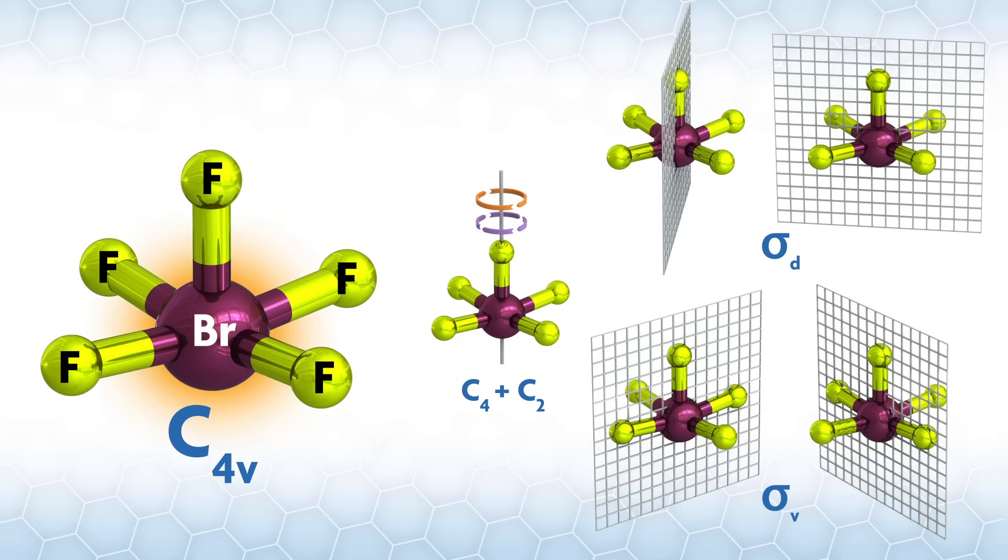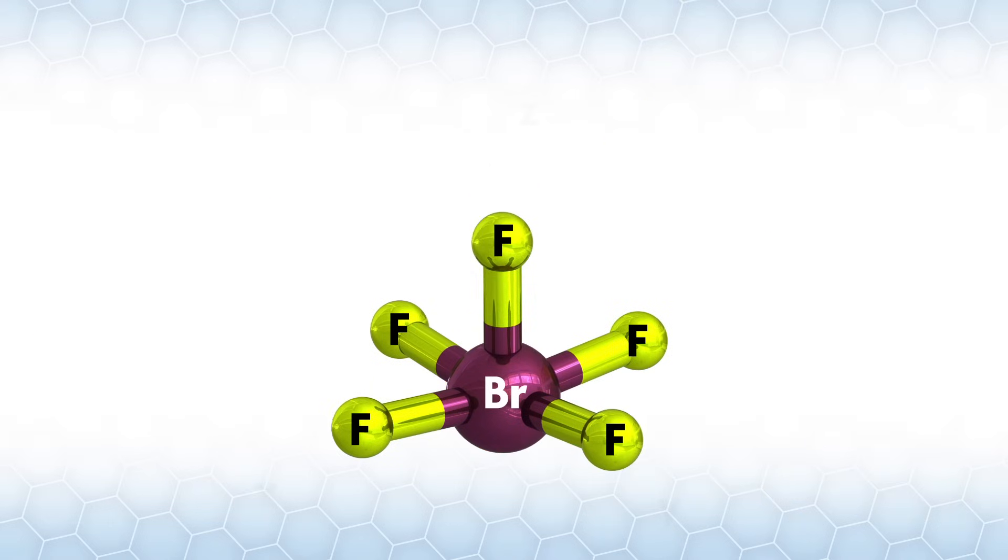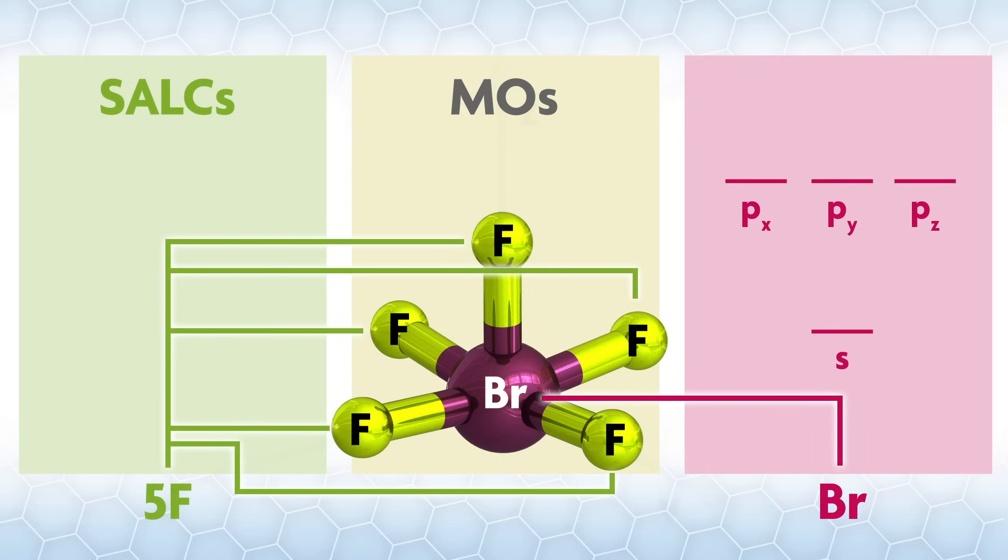Using our BrF5 example, we will write out the molecule with appropriate axes. As discussed in the group theory video, the principal rotation axis is almost always the highest order rotation axis, which we'll call Z. In this case, the Z axis will be along the axial F-Br bond of the square pyramidal structure. We'll put the X and the Y axes along the Br-F bonds in the equatorial plane. Bromine is a central atom that sits where all symmetry operations meet. We will make the bromine one side of our MO diagram.